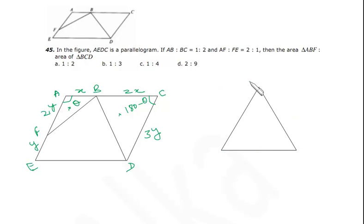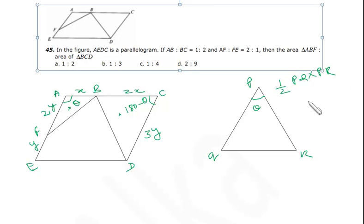If we have this as a triangle PQR with angle theta, then the area of this triangle will be half PQ into PR into sine theta. That is the area of the triangle.